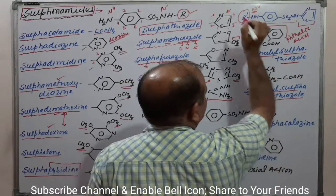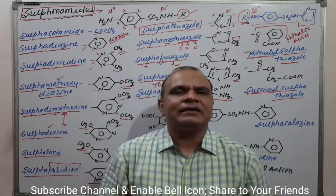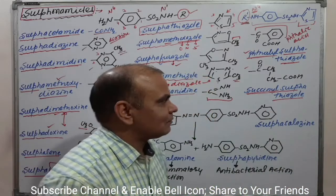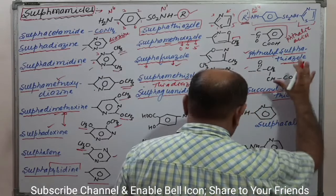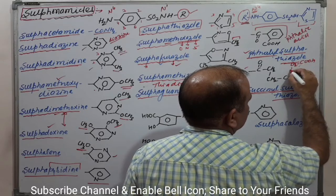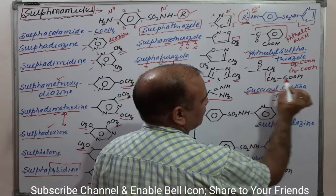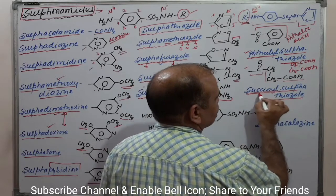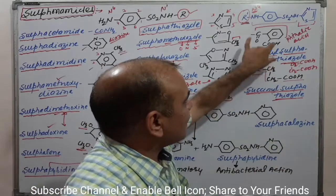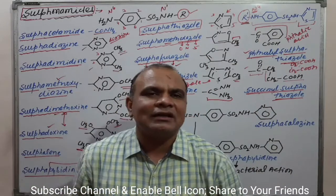Similarly, if R is substituted with a succinyl group — succinic acid is a 4-carbon dicarboxylic acid with terminal carboxylic groups (HOOC-CH₂-CH₂-COOH) — this gives succinylsulphathiazole. Because the carbon chain is larger, these are poorly absorbed molecules.